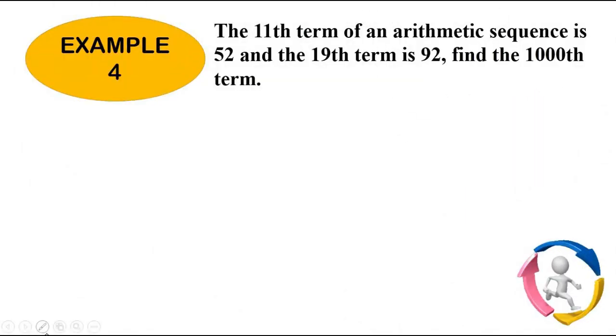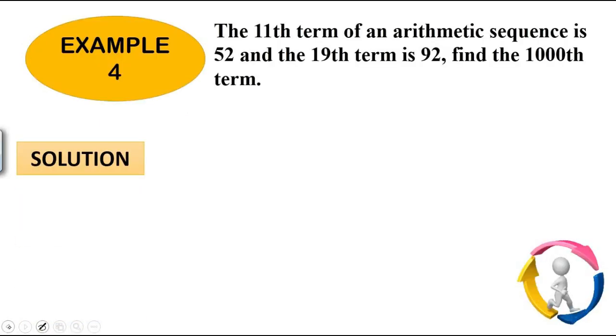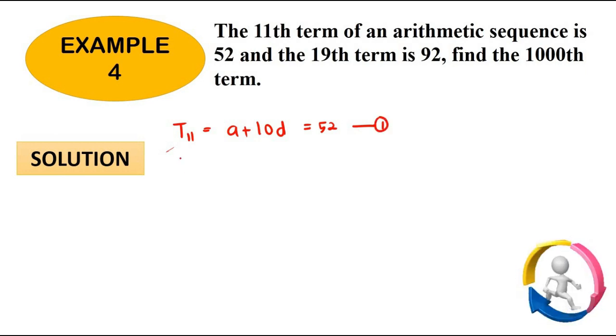Next, in example 4, the question wants you to find the 1000th term. The 11th term of an arithmetic sequence is 52 and the 19th term is 92, find the 1000th term. So the trick is please list all the information that you know. So 11th term means T11, T11 is a plus 10d which at the same time is 52. So this is our first equation.